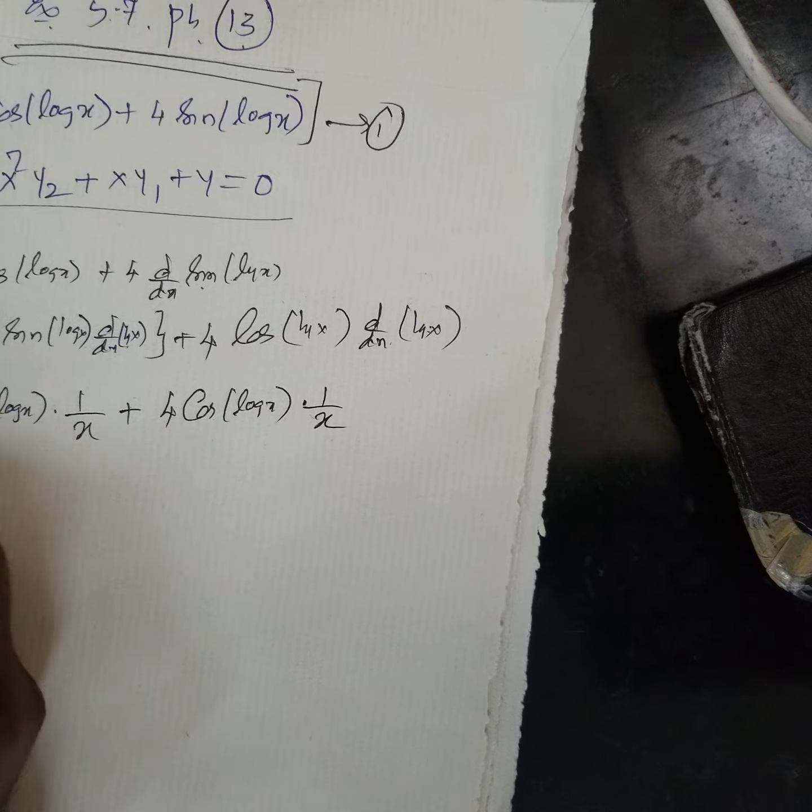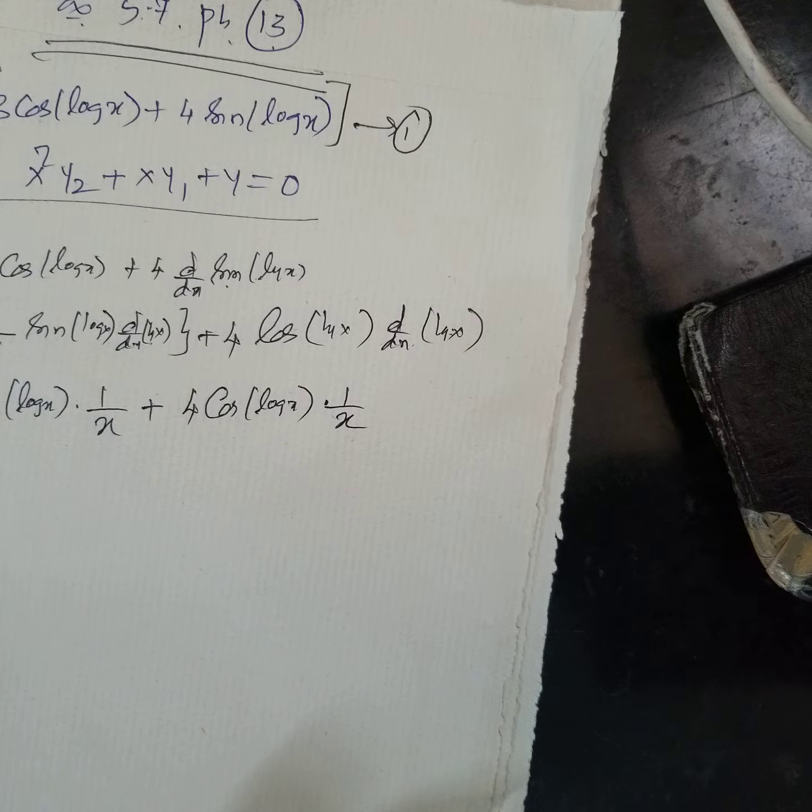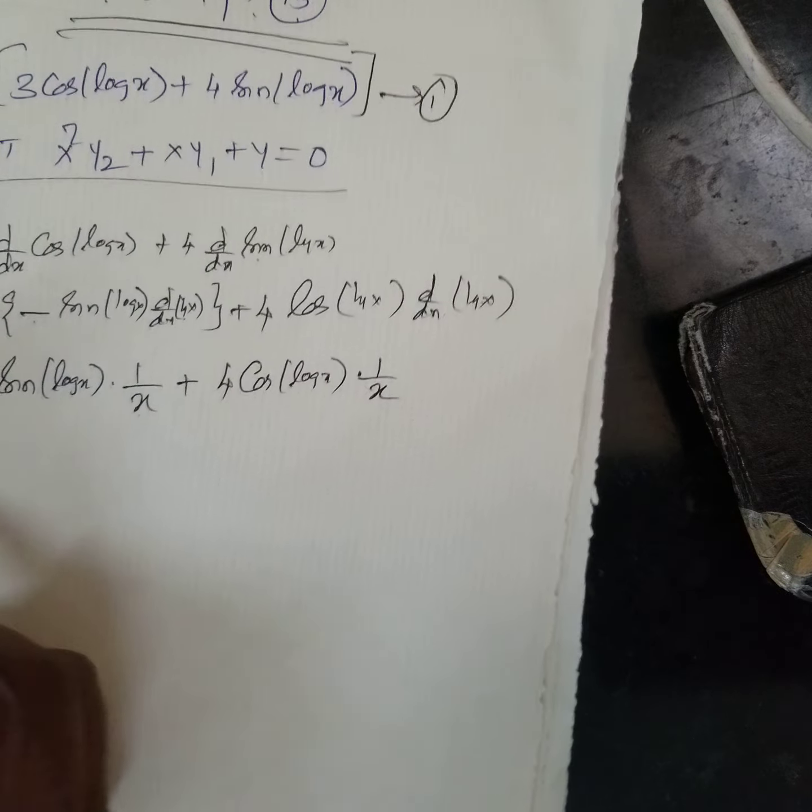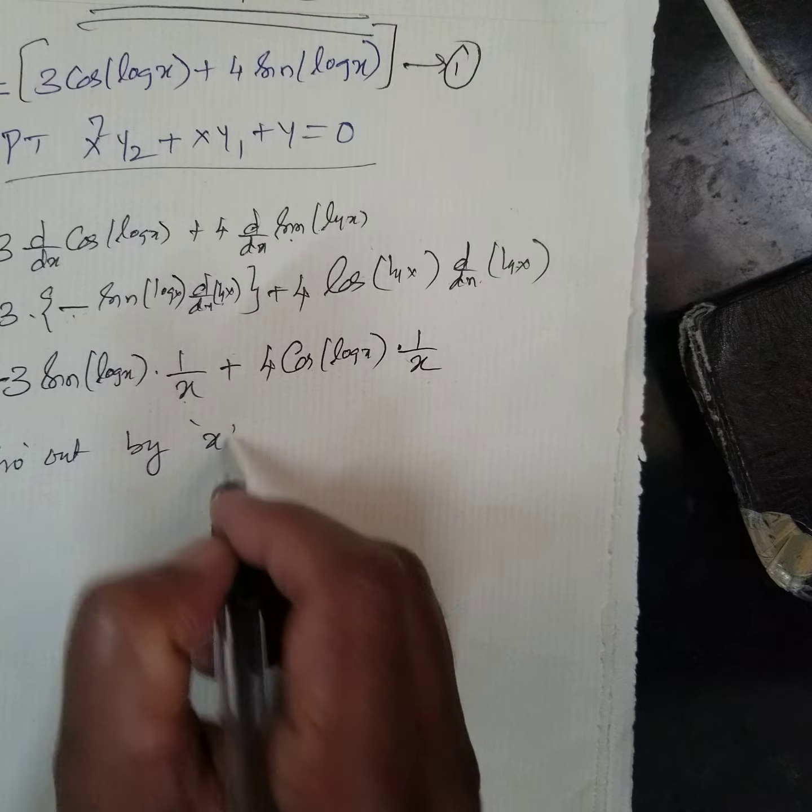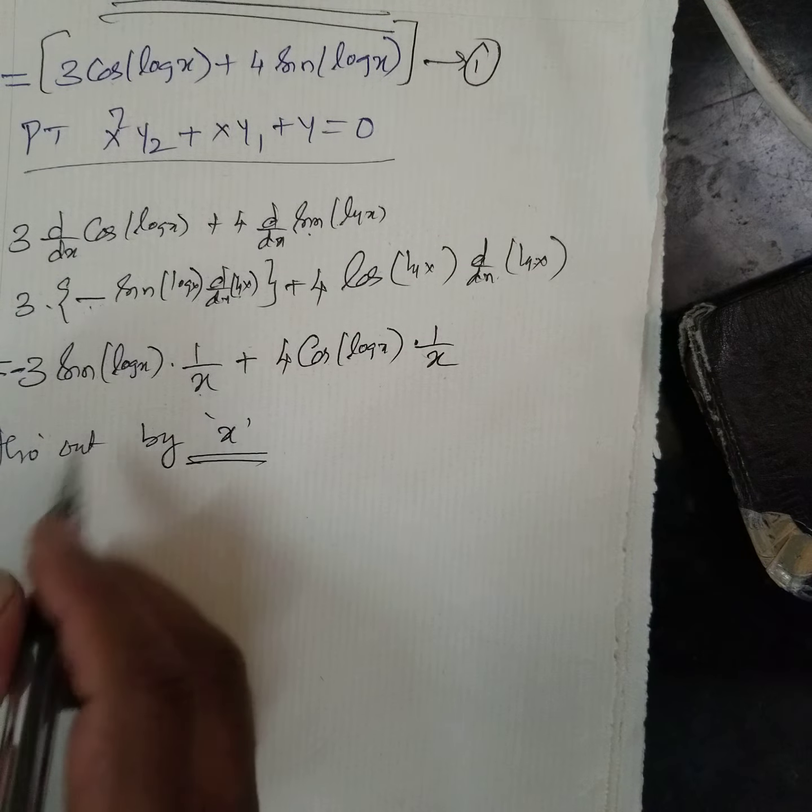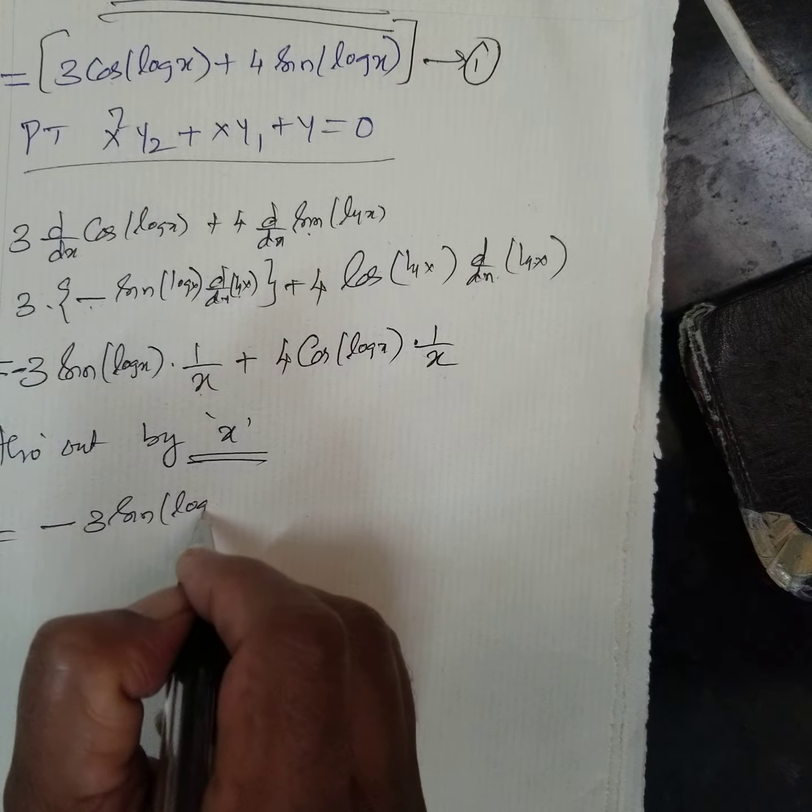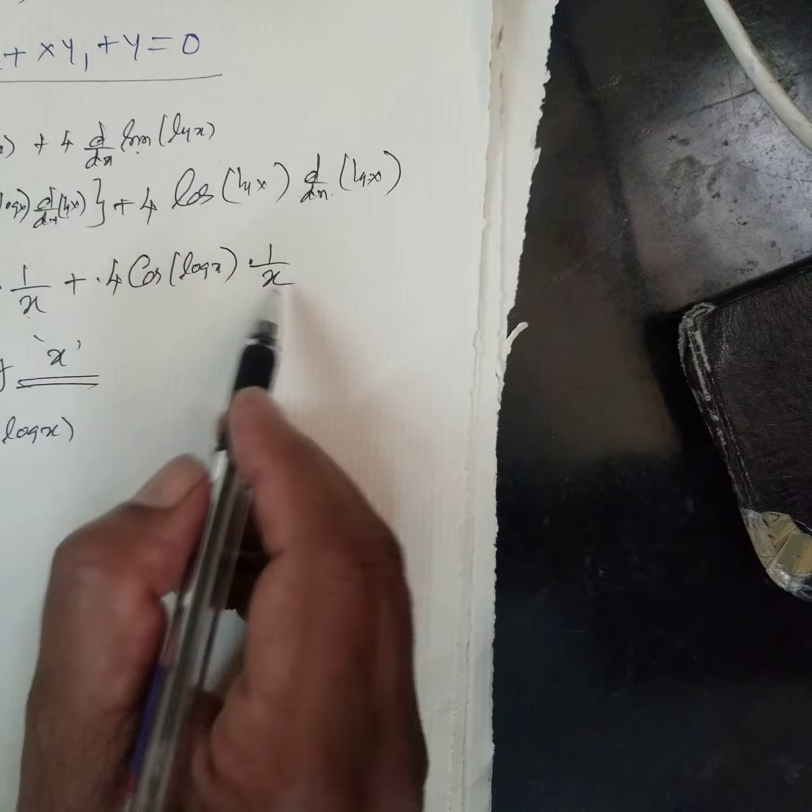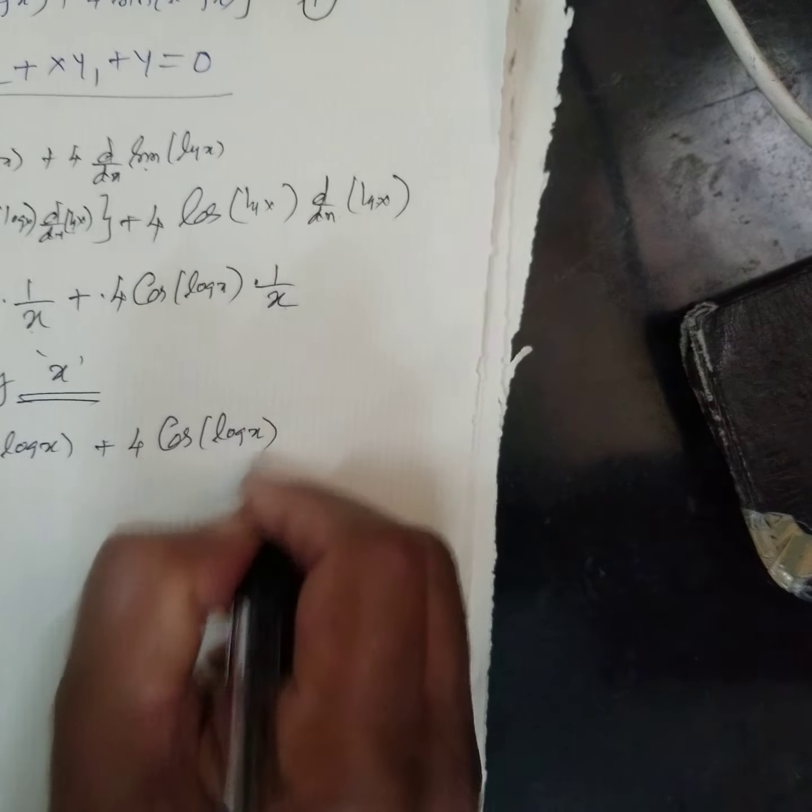Now, this is y1. Again, u by v, you have to do it, it is very lengthy, but very important thing is, multiply throughout by x. Therefore, what will get x into y1, is equal to minus 3 sin log x, multiply by x, x get cancelled. Again, if you multiply throughout x, x get cancelled, plus 4 cos log x.